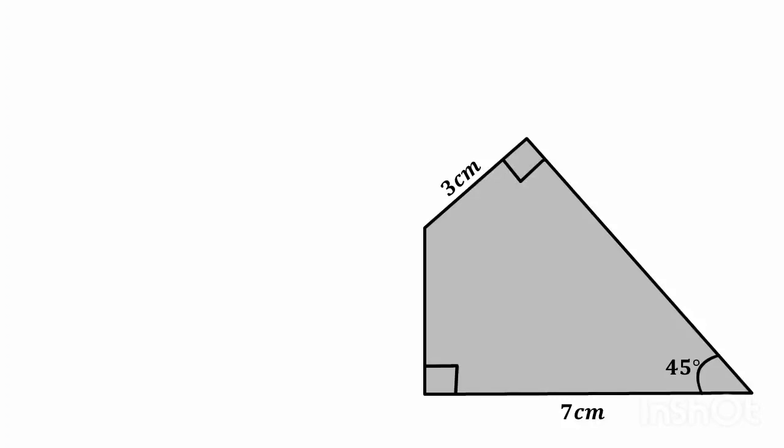In this question we have to find the area of this figure. Extend these two sides of the figure which intersect each other and it will be a right angle triangle. One angle of this right angle triangle is 45 degrees, so this angle will also be 45 degrees.